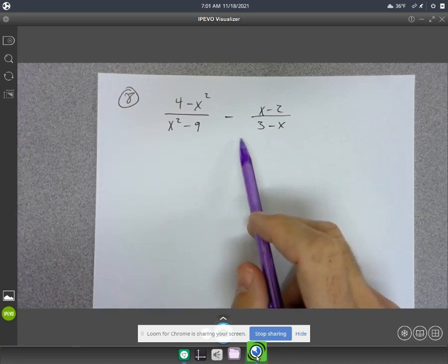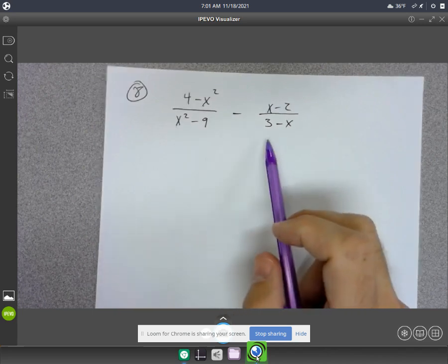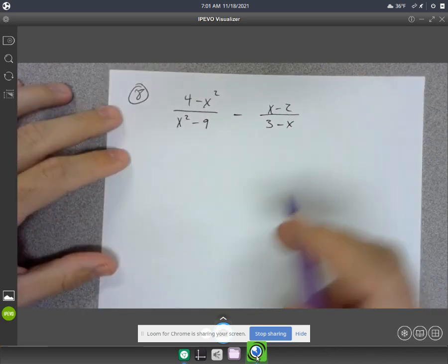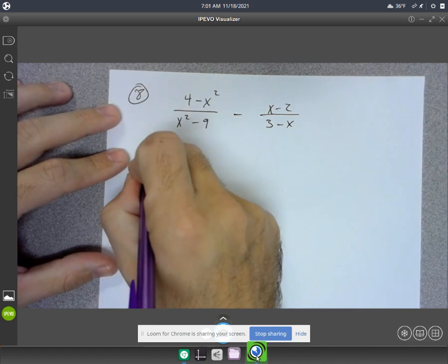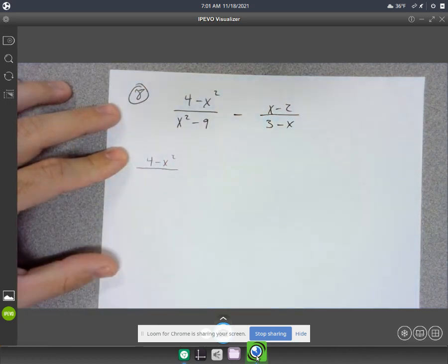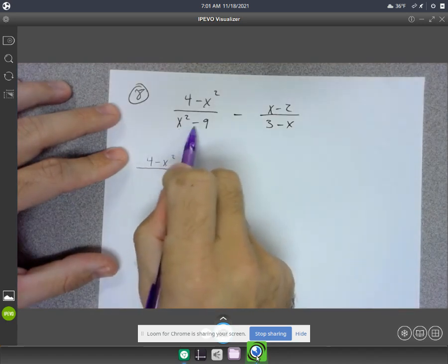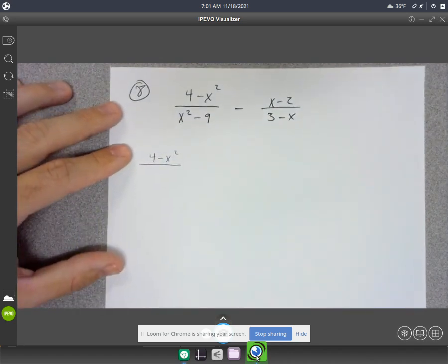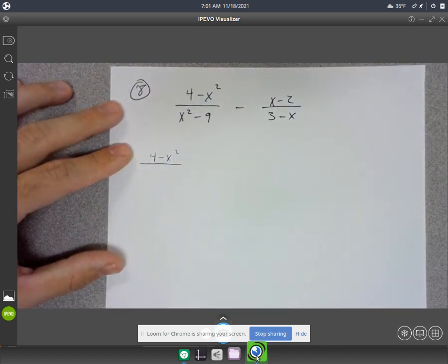So first step is going to be to factor the denominators, right? I'm going to have 4 minus x squared, and then x squared minus 9. You can factor using the difference of squares, so go ahead and do that.